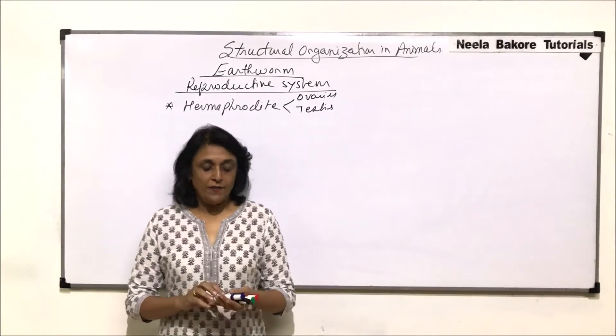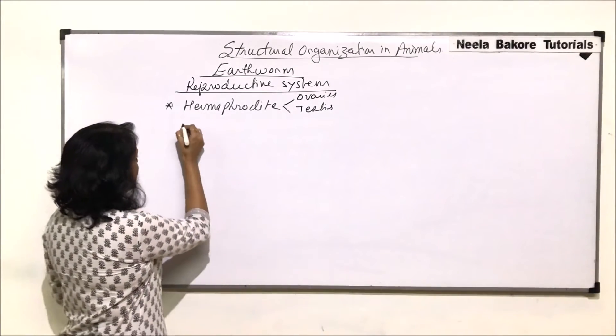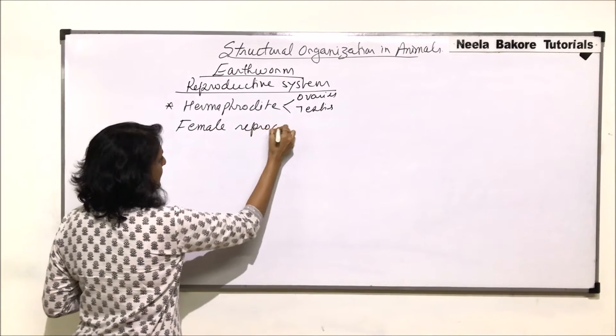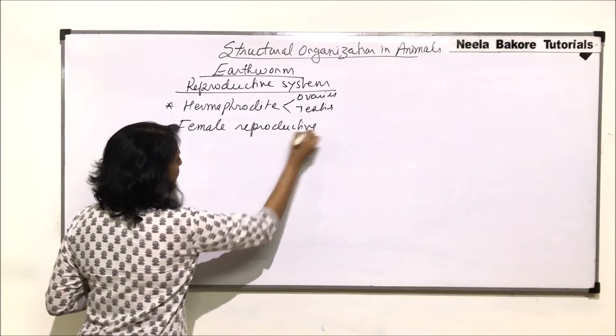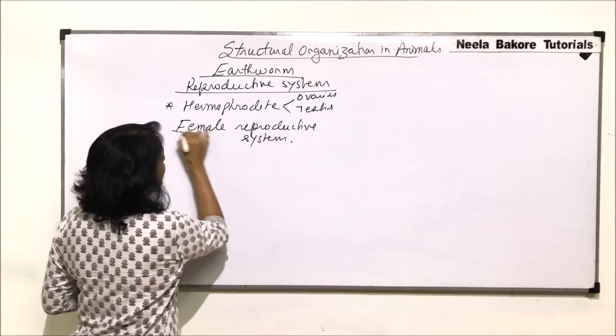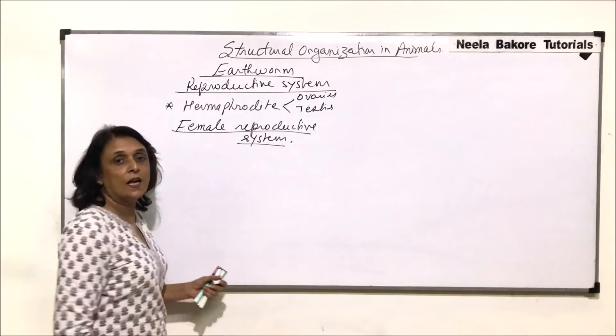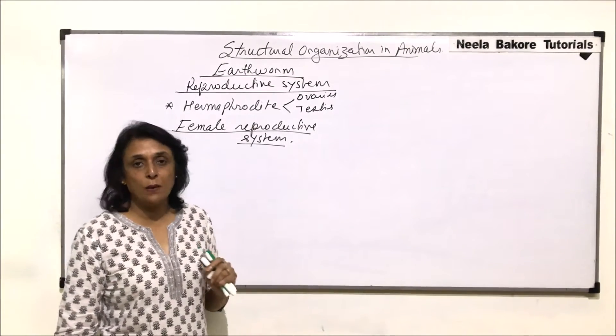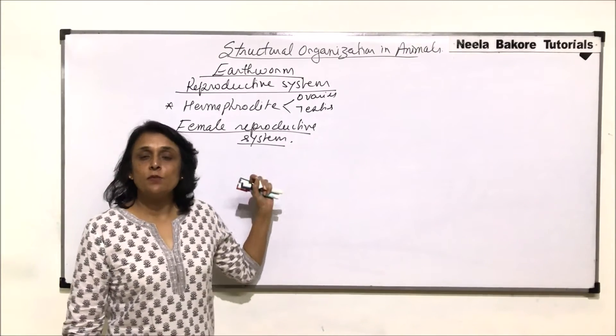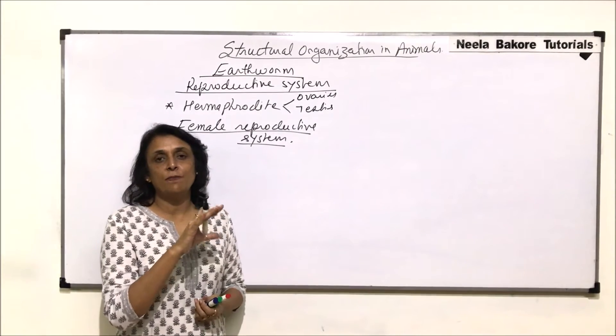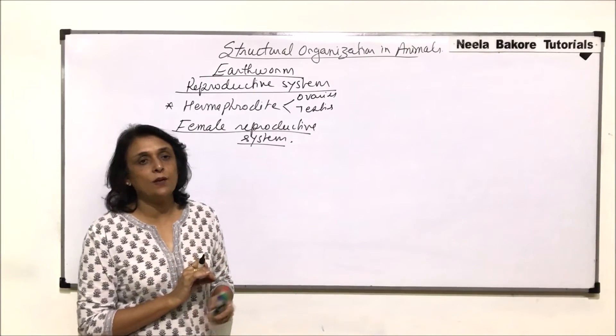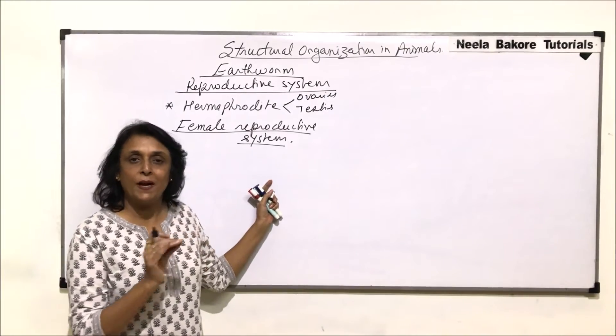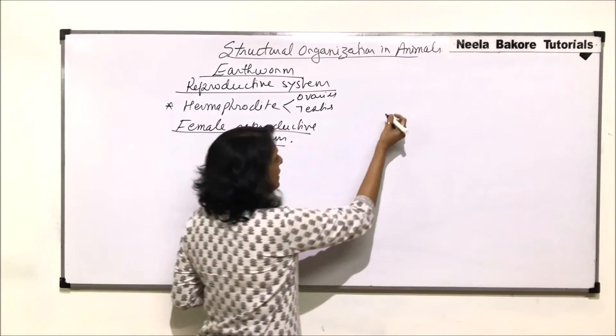Let us now talk about the female reproductive system. As we said, the worm is hermaphrodite, meaning both male and female reproductive parts are present in the same worm. In the previous video we talked about the male reproductive parts and the segments where they are located. Now in this segment we will talk about the female reproductive part and where the structures or glands are.